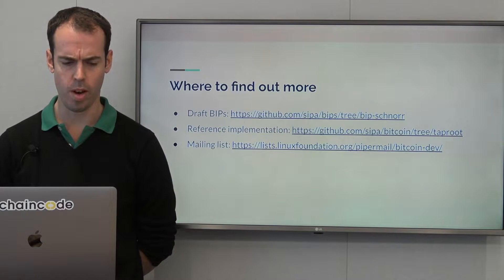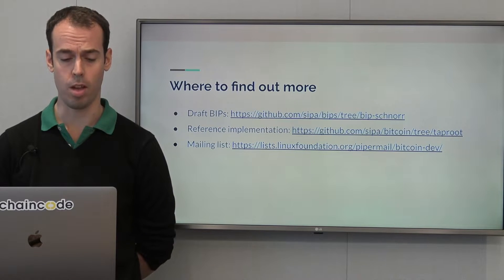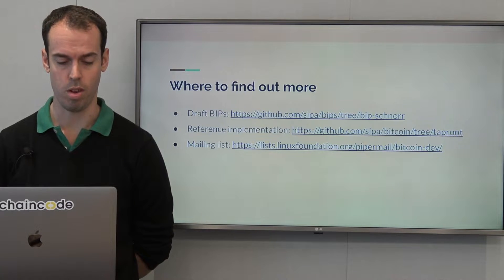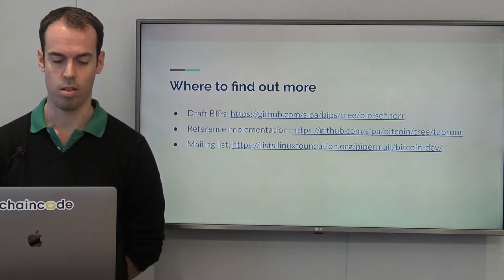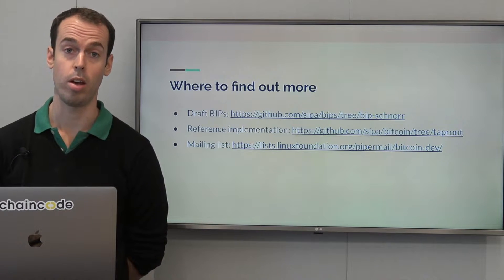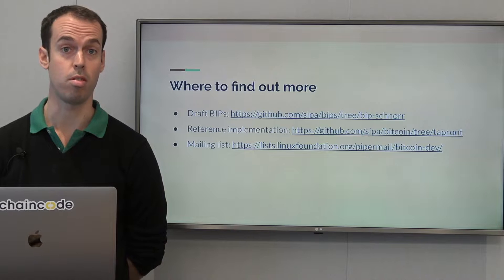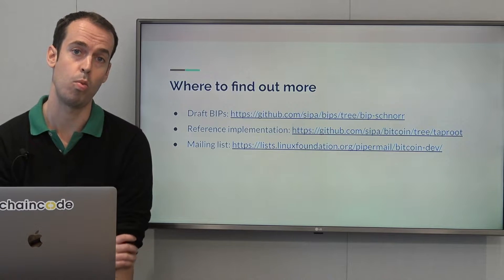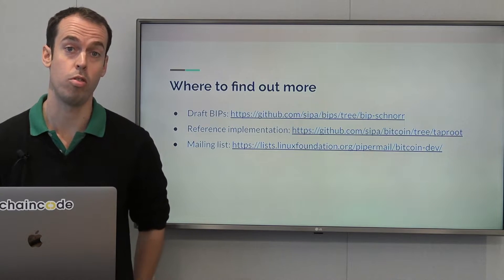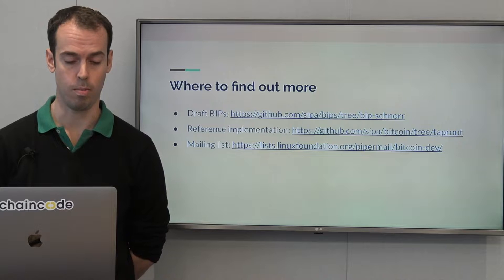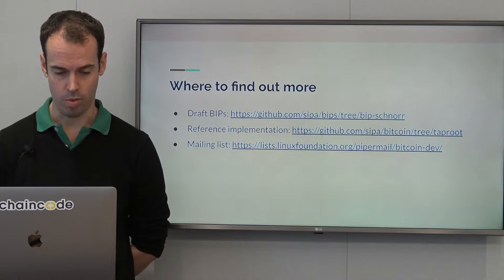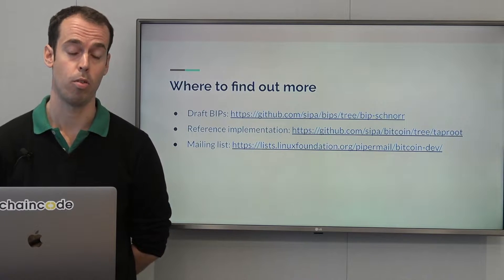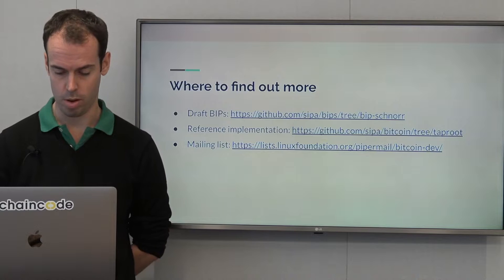You can also find a reference implementation at SIPA's Bitcoin repository — that's at SIPA slash Bitcoin — and the branch is Taproot. And finally, the mailing list is where all discussion of this proposal is taking place. If you go there, you'll be able to find SIPA's original post and all of the responses to it.